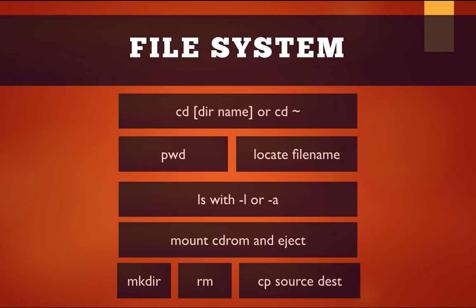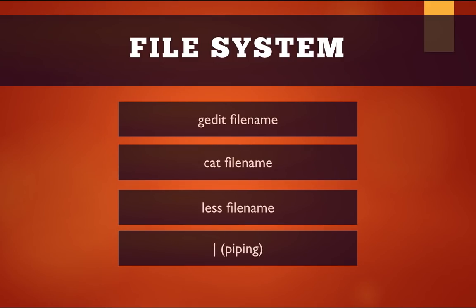ls -a shows hidden files in the folder. You can also mount or eject a CD drive. The mkdir command makes a new directory. rm removes a directory or file. cp copies a file from a source to a destination. The gedit command opens a text editor for the specified file. The cat command displays the contents of a file directly onto your terminal without opening a separate program.